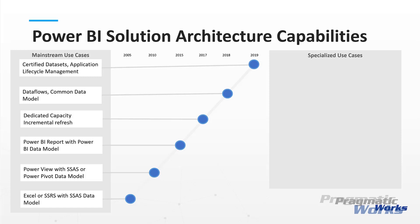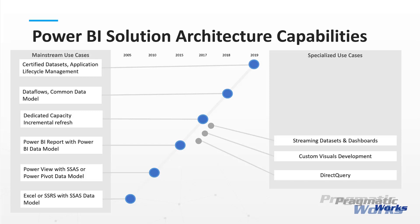Let's take a look at some features that not everyone will use or necessarily needs. Back in 2016, we saw the introduction of direct query — the ability to connect to data sources without importing and caching that data in the data model. Custom visual development: if you want to create your own custom visuals, you can do that using the custom visual toolkit, with lots of starting code available from Microsoft on GitHub. We also have streaming datasets and dashboards, which allow us to programmatically stream data to a Power BI dashboard to see data change in real time. Application embedding allows us to embed Power BI visuals, reports, and dashboards into a custom web application.